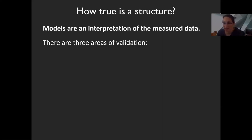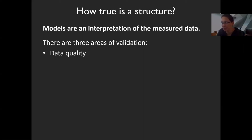There are three areas of validation. One is the data quality: how good were the measured data, and do I believe the quality of these data actually supports the conclusions drawn? It is obvious, for example, that if a paper about a bound metal ligand discusses the distance to the metal atom in detail — say whether it's 0.1 ångström here or there — but the overall resolution of the data was only 3 ångström, the X-ray data would in no way support this with any evidence. It would be pure fiction.